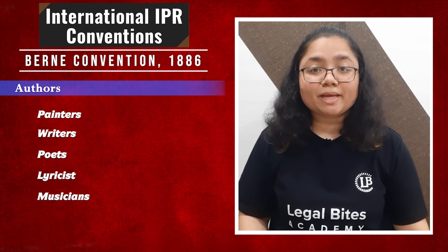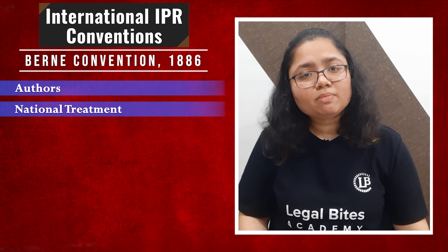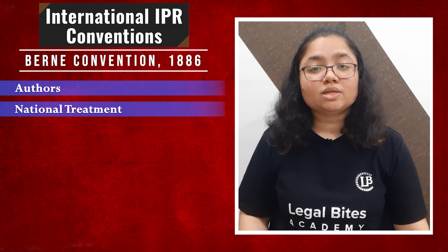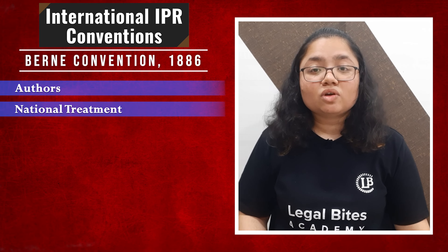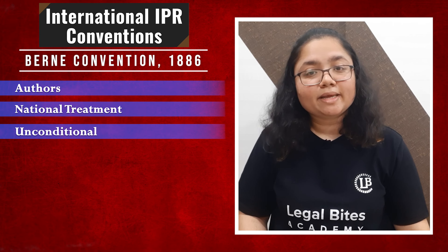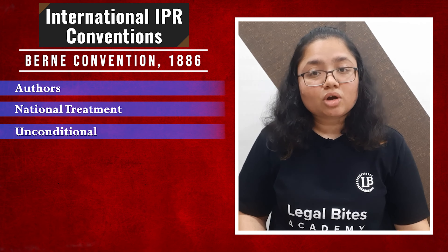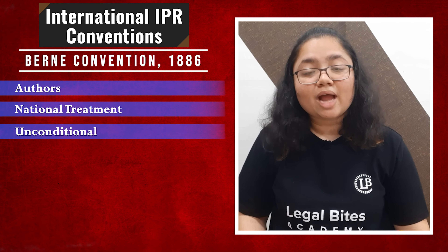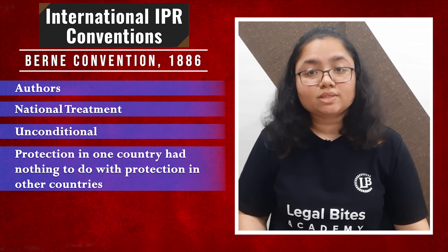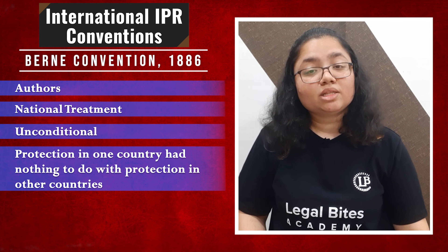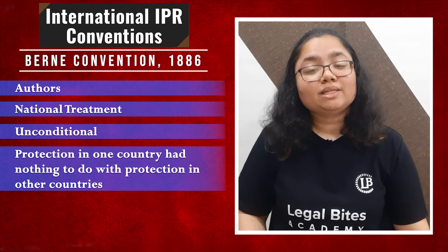This convention was based on three main principles. The first was that every nation which is a party to the convention should get equal protection for their copyright in all other nations which form parties to the convention. The second was that such protection was not based on any conditions to be fulfilled — it was given automatically by virtue of being a party to the convention. The third was that the protection to copyright in the country where the work originated had nothing to do with the protection in another country, but the period of protection in the country of origin was considered; if that was lesser, then the country could deny further protection beyond the period offered by the nation of origin.